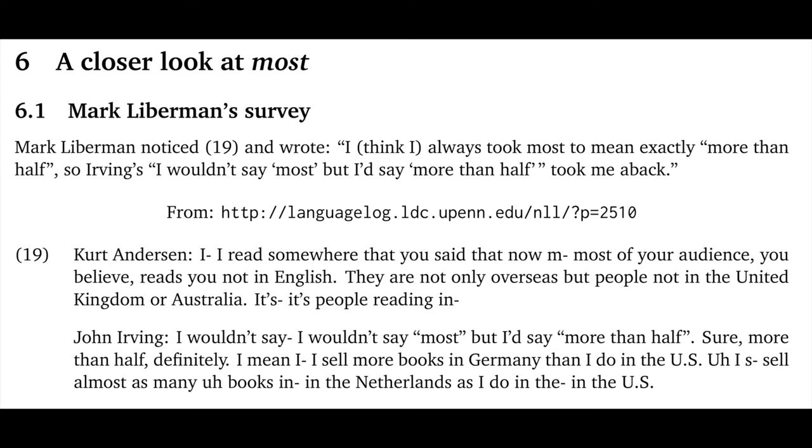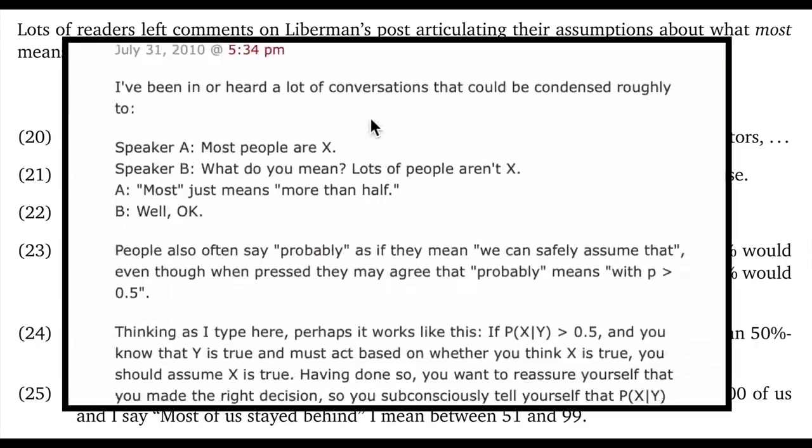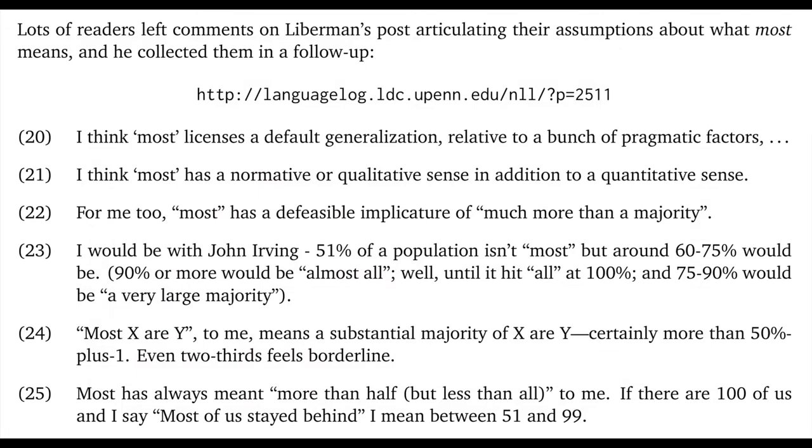Lieberman said he was originally on our side. He said: I think I always took most to mean exactly more than half. So Irving's 'I wouldn't say most, but I'd say more than half' took me aback. Lots of readers left comments on Lieberman's post. The first two responses here might be carving out some space beyond truth conditions. The first one says: I think most licenses a default generalization relative to a bunch of pragmatic factors. So that perspective might allow that most means more than half in its truth conditions, but maybe most brings more to the table beyond truth conditions. The next comment is similar: I think most has a normative or qualitative sense in addition to a quantitative sense.